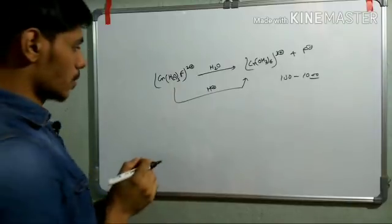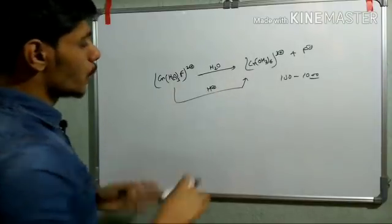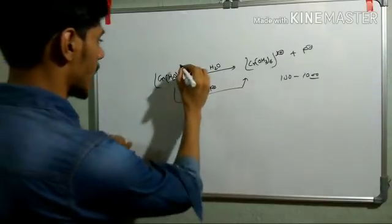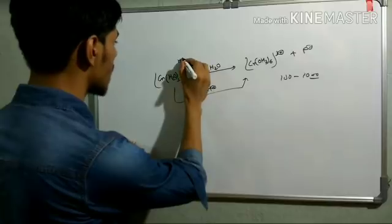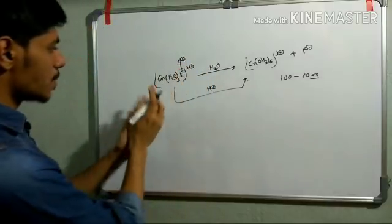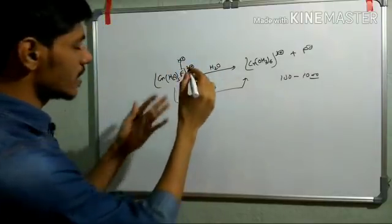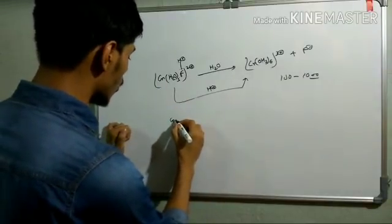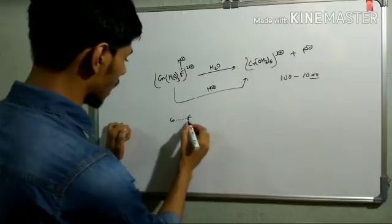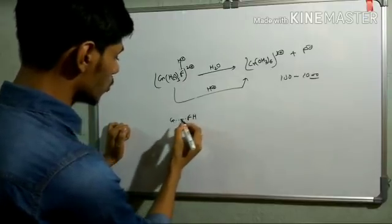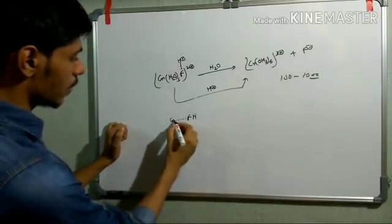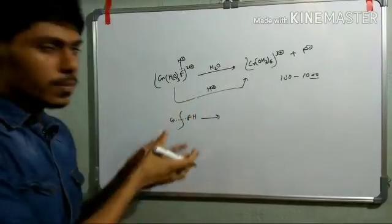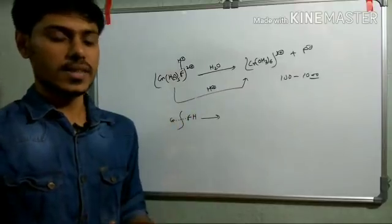The mechanism of acid catalysis is as follows: fluorine possesses a lone pair of electrons and can bind with the added acid. This binding makes the leaving group HF rather than F⁻, which weakens the metal-fluorine bond. When acid catalysis is applied, this metal-fluorine bond is weakened and dissociation is favored, which is why the rate of the reaction increases.